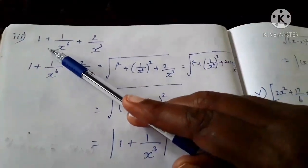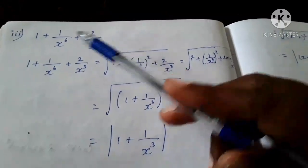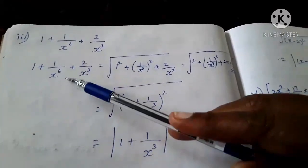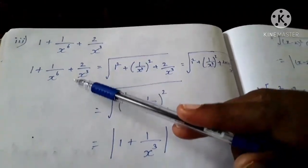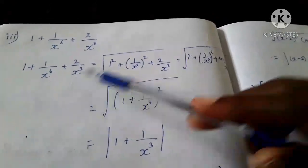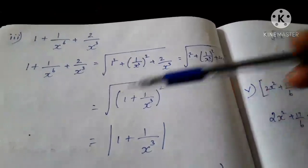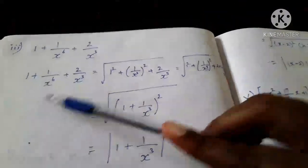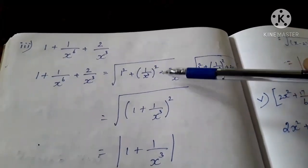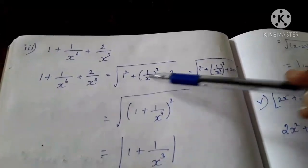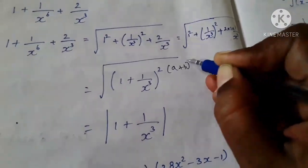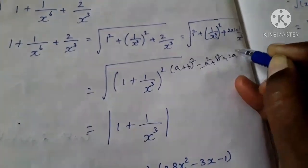Next, the third question: 1 + 1/x⁶ + 2/x³. Here we cannot factorize; we have to use the identities — (a + b)² or (a − b)² or the three-variable formula. As in the first question we used (a + b)², here also we apply that. 1 we can write as 1², and 1/x⁶ we can write as (1/x³)². So this matches a² + b² + 2ab.